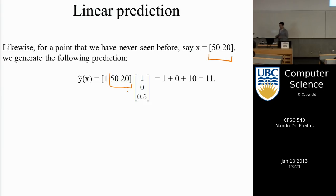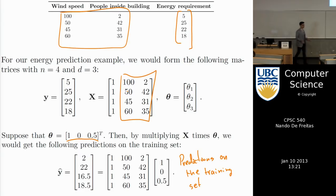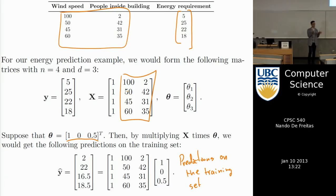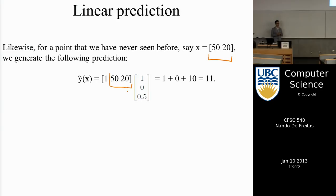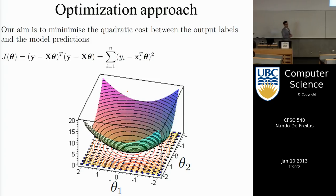To summarize: linear regression is all about knowing how to form these matrices. Once you form them, the code is almost done — the only missing piece is how to compute θ. Step one when you get data is massage it into the matrix X and the vector y. Then one extra line of code computes θ. To make new predictions, form the vector x̲ for the new input and multiply it times θ — it's all matrix-vector multiplication.